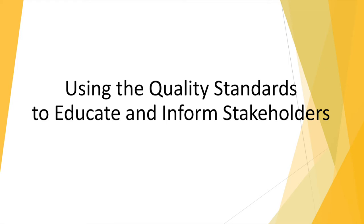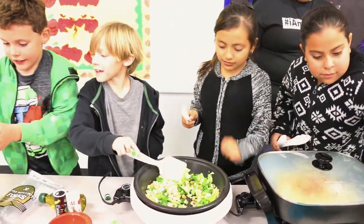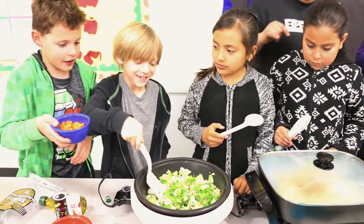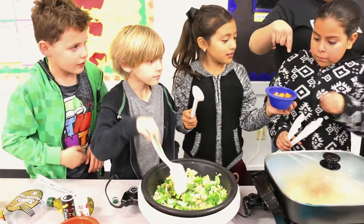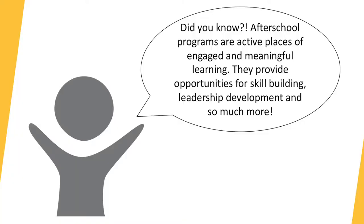The quality standards are intended to create a framework of clear expectations and a shared vision of quality among multiple stakeholders. The standards can also be used as a resource to support collaborative efforts for stakeholders that are unfamiliar with after-school and summer learning programs. For example, if you use the phrase 'after school' or 'summer learning' with a potential local business partner, that might invoke an image of child care or supervised recreation. In these cases, you can use the standards to educate and inform those stakeholders that these programs are active places of engaged and meaningful learning, skill building, and leadership development where youth practice healthy choices and behaviors in a safe, supportive environment for all students.